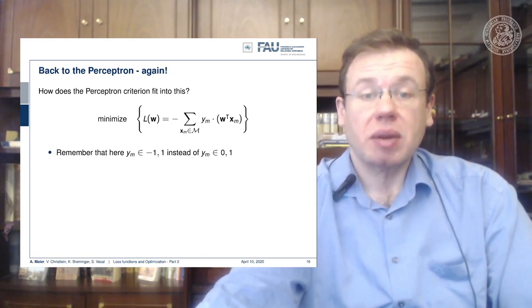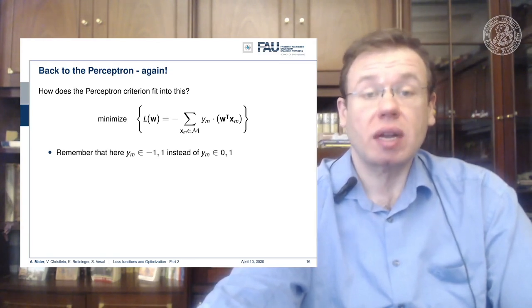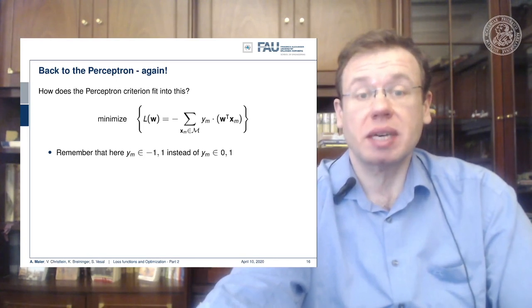Also note that here we don't have a zero-one category but a minus one-one, because this allows us to multiply with the class label. This will then always result in a negative number for all misclassified samples, and then we add this negative sign in the very beginning such that we always end up with a positive value.